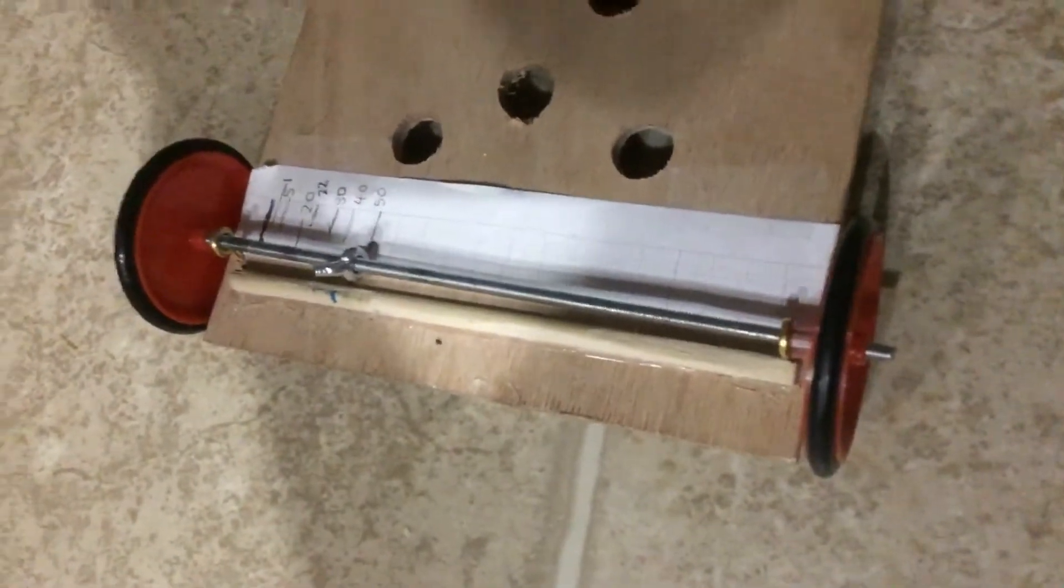...a wooden board with fasteners holding the metal rods. The metal rods are attached to the wheels. As you can see, we drilled holes to lighten the weight. This is the braking system—it's...